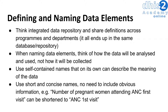Remember that all of this ends up in the same database or repository. When we name data elements, we really want to think about how the data will be analyzed and used, not just how it will be collected. We want to use self-contained names that, on their own, can describe the meaning of the data, and we want to use short and concise names — there's no need to include any obvious information. For example, on a particular data collection tool, a data element called 'number of pregnant women attending ANC first visit' can be shortened to 'ANC first visit'.